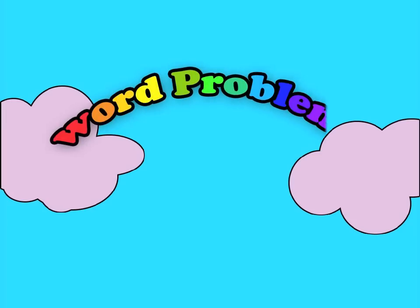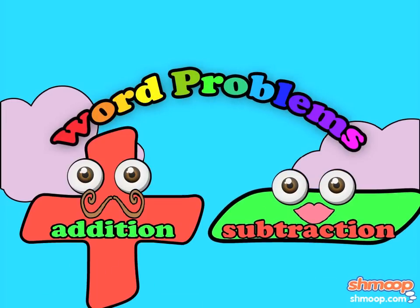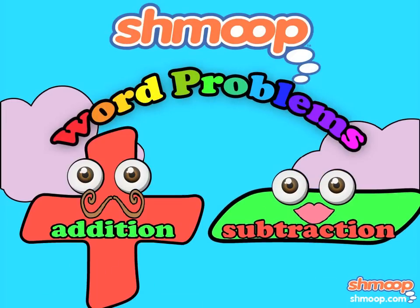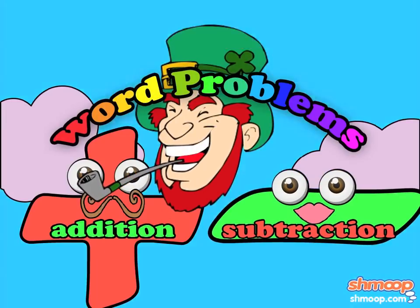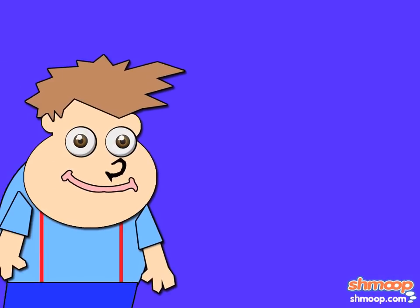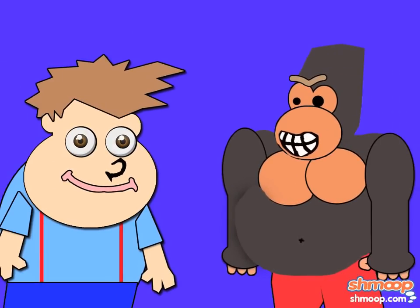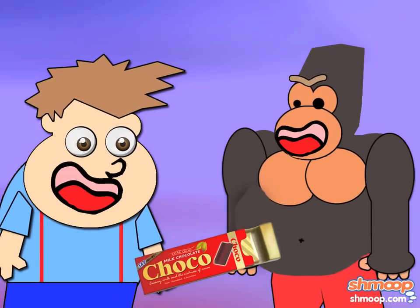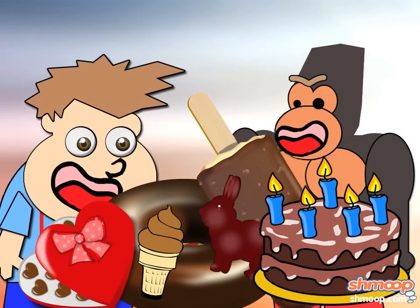Word Problems with Addition and Subtraction, a la Shmoop. Augustus Gloop and his even fatter brother, Gargantuous Gloop, like chocolate. We mean really, really, really like chocolate.